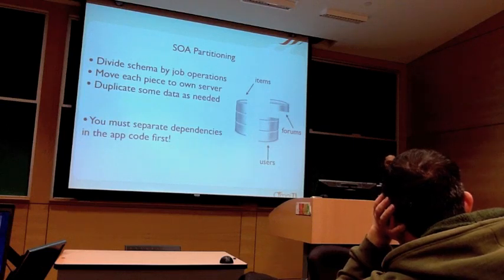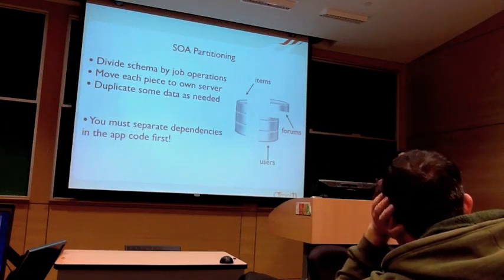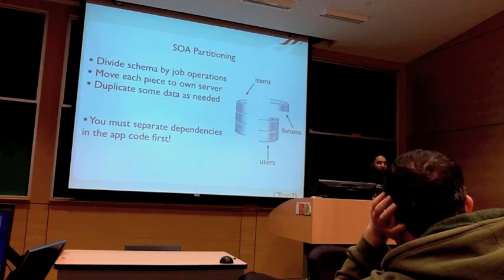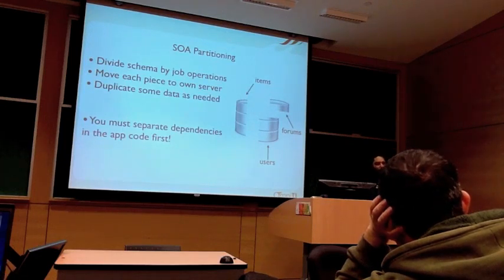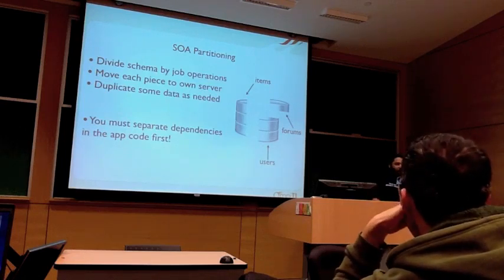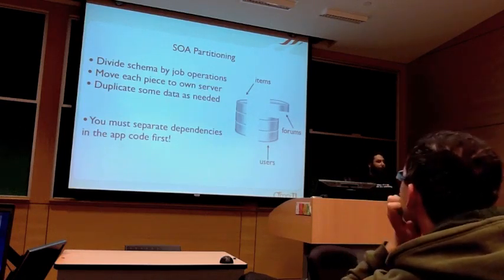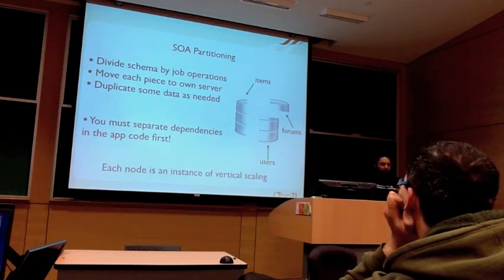What you really need to do is have the homepage handle each component independently. The user logs in hitting the user database; if the forums database is down, display a message like 'forums are currently in maintenance' and keep going. Now if anything goes wrong with the forums database, you're not taking out the whole service. People can still log in, still look at items — other pieces of your service remain accessible. This also enables a more rapid pace of development.